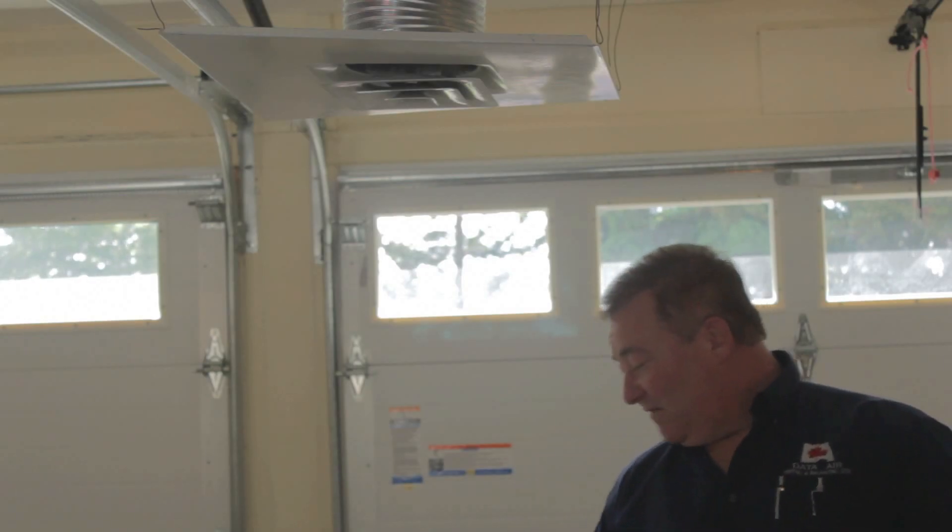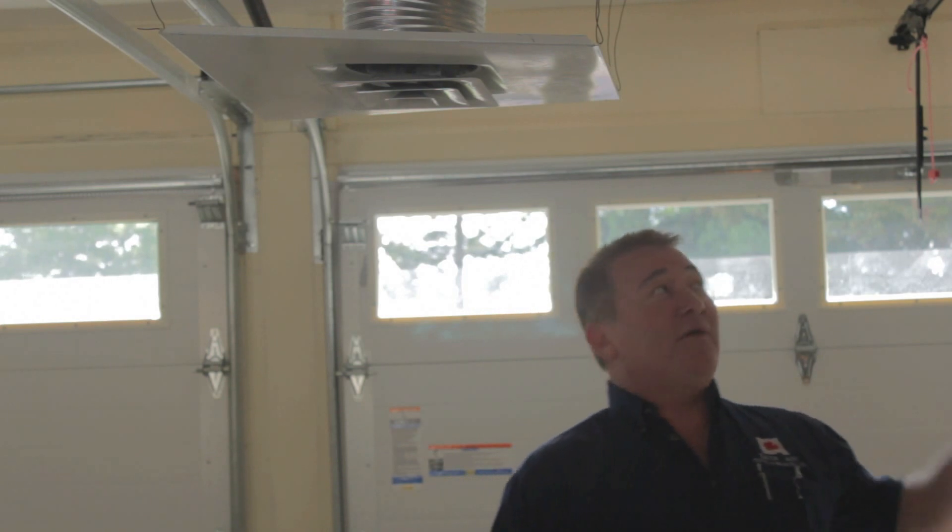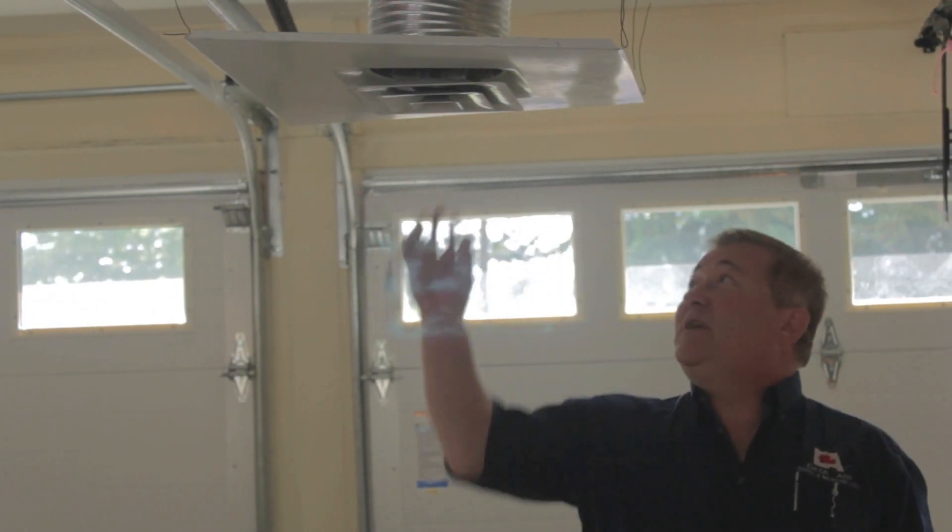Okay, so we've just measured the airflow of this diffuser with our airflow hood. Now what we need to do is determine where the balancing damper is located in the ceiling space above. Once we've found the balancing damper, then we take that balancing damper and adjust the airflow at the diffuser to either increase it or decrease it based on the occupant's needs.